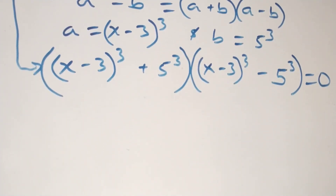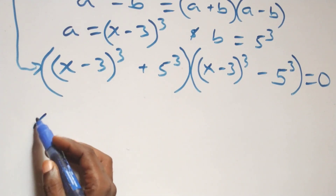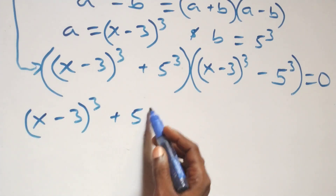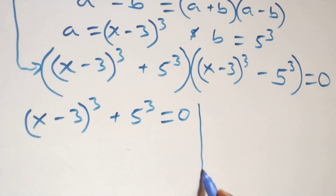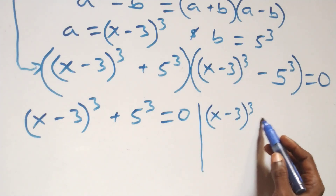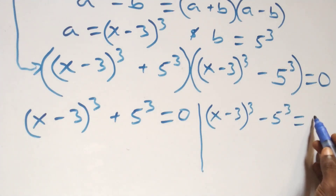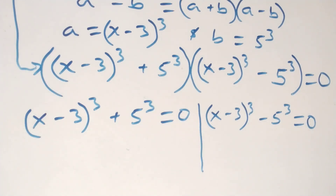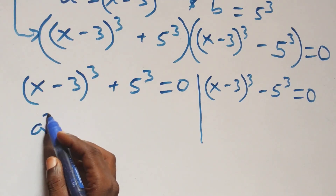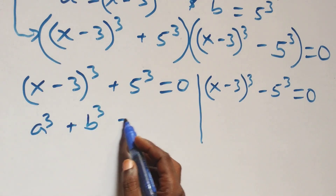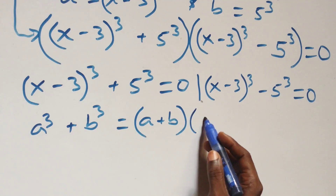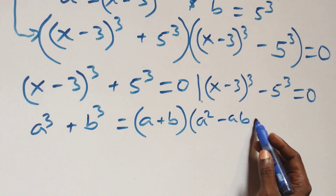At this point we have two possible cases. First one: x minus 3 raised to power 3, plus 5 raised to power 3, equals to 0. Solving this side, this follows when we have a raised to power 3 plus b raised to power 3, which can be written as a plus b, into brackets, then open brackets, a squared minus ab plus b squared.